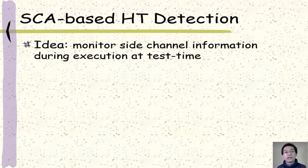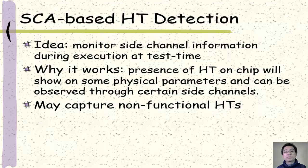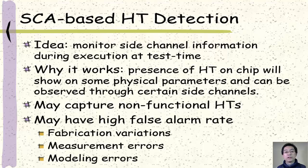Another way to do hardware trojan detection at test time is side channel analysis, just like the side channel analysis attack. We monitor the side channel information during the execution of the system at test time. If the system has a hardware trojan, its presence will show on certain physical parameters and can be observed through side channels. These are good because they not only capture functional hardware trojans, they can also capture non-functional hardware trojans like parametric hardware trojans. However, they may have a high false alarm rate because of fabrication variations, side channel measurement errors, or modeling errors.